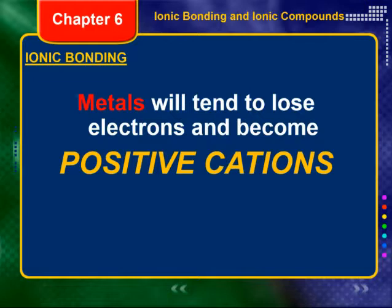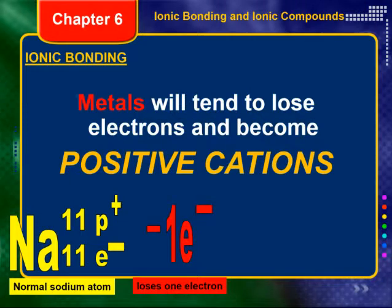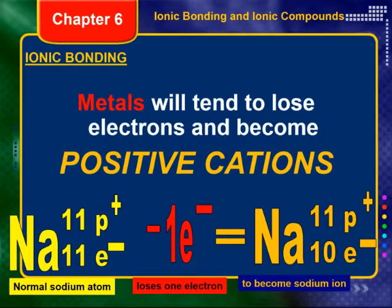A normal sodium atom is number 11 on the periodic table, so it has 11 protons. If it's neutral, it's got 11 electrons as well. It wants to have 10 electrons so that it has the electron configuration of neon, so it's going to lose one electron. As a result, we have a sodium ion — it's still sodium because it's got 11 protons. The atomic number defines the identity of the atom. But it's got fewer electrons than it's supposed to have.